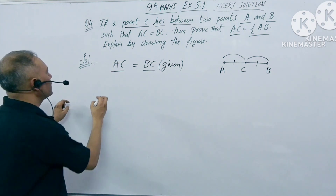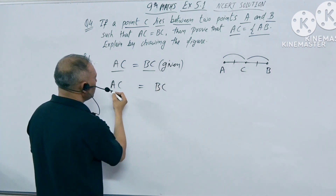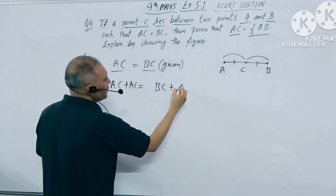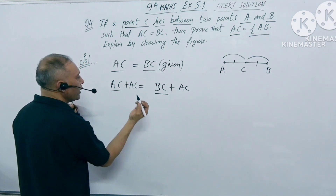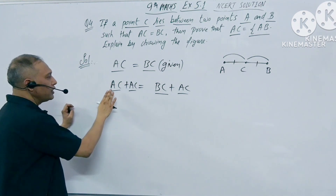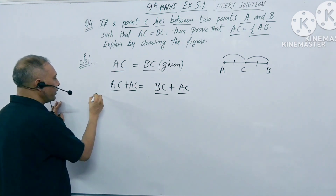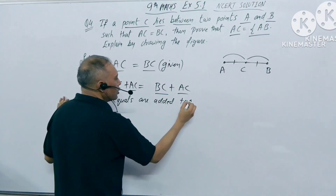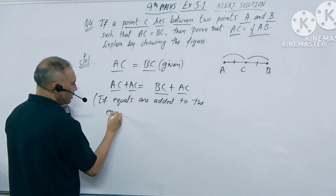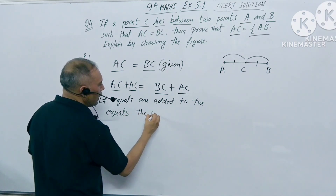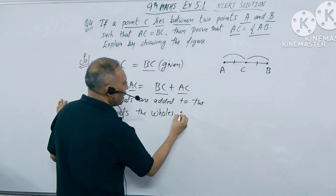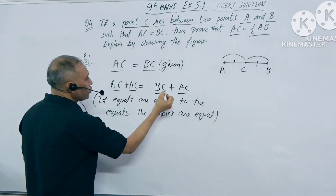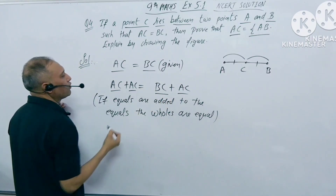So we have AC equals BC — these two are equal. If we add AC to both sides, we add AC here and AC here. Euclid's axiom states: if equals are added to equals, the wholes are equal. So adding equals to equals gives us equal wholes. We will solve this question using this concept.